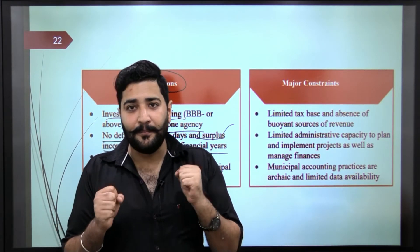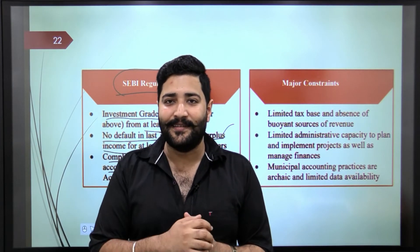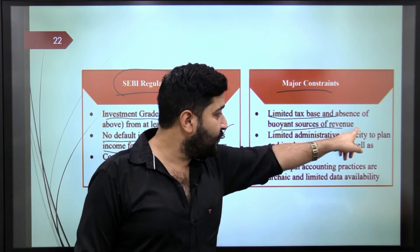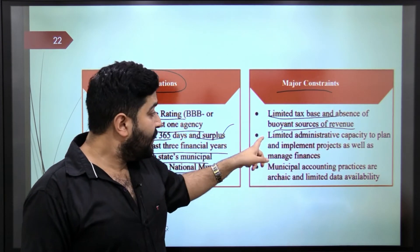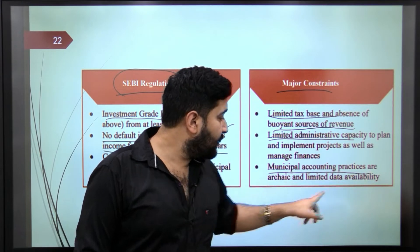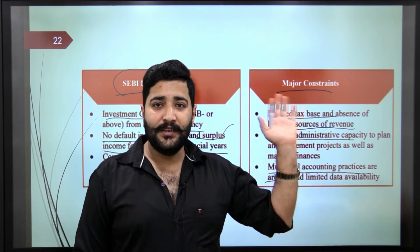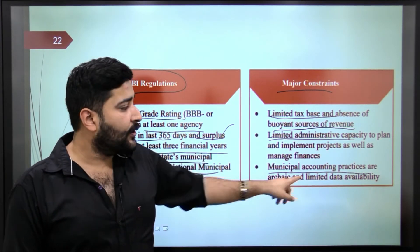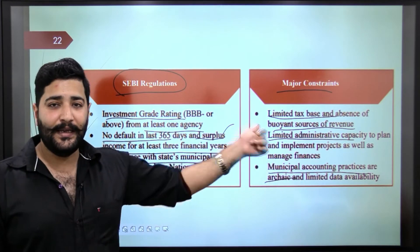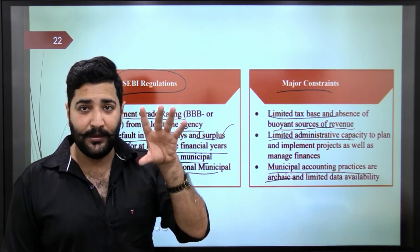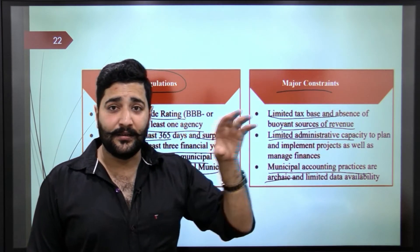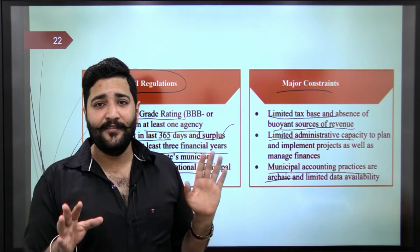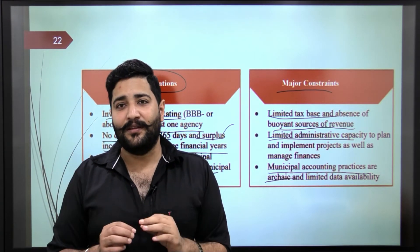Note these points — because we are not just aiming for prelims cutoff; we want to become DSP, SDM. Major constraints for ULBs include: limited tax base, absence of buoyant sources of revenue, limited administrative capacity, and archaic municipal accounting practices. These are direct answers to questions about why ULBs face external revenue challenges. PDF will be available very soon.